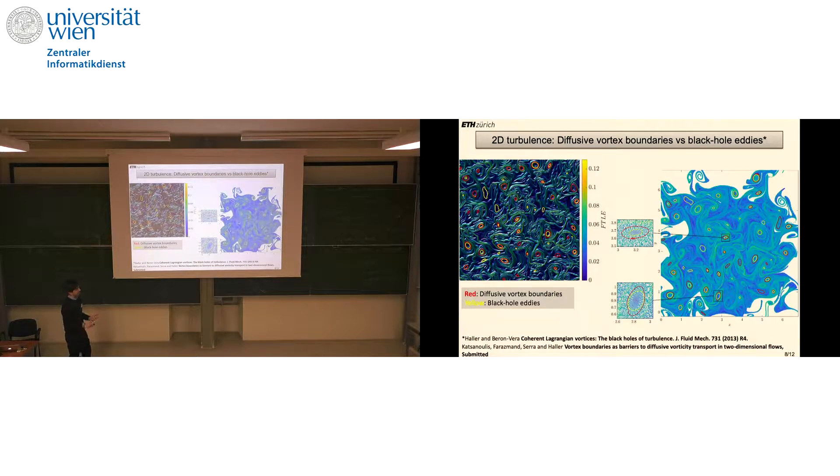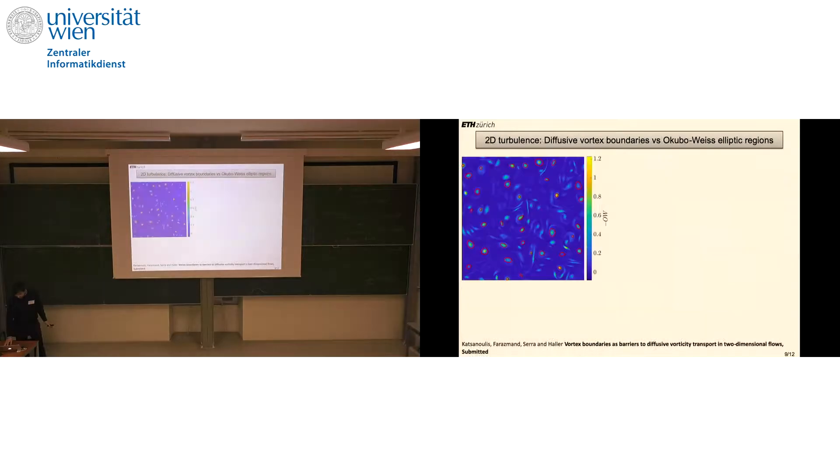Next we compared the diffusive vortex boundaries with a criterion the community seems fond of: the Okubo criterion, the two-dimensional counterpart of the Q criterion. George mentioned yesterday it's not objective. I'll add it's not only not objective, but it won't give you actual curves. It only demarcates domains of vorticity where this parameter attains very negative values.